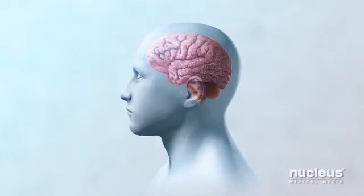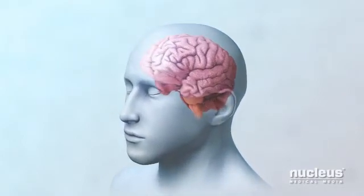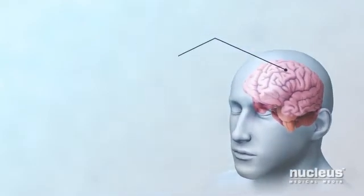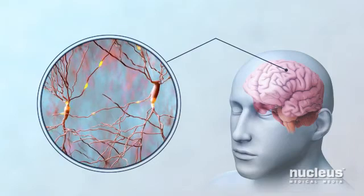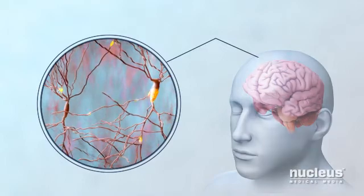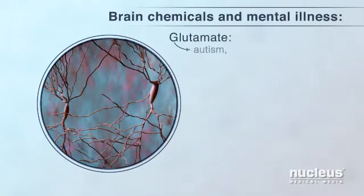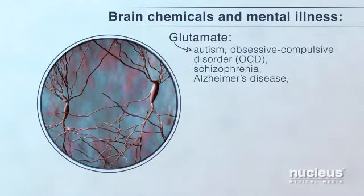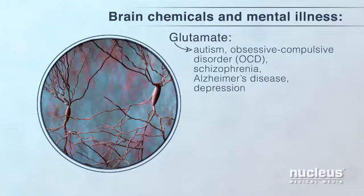When there is an imbalance of chemical messengers in the brain, neurons may have trouble passing messages between each other. The most common chemical messenger is glutamate. It increases the chance that an impulse will form in other neurons. People with mental illnesses such as autism, obsessive-compulsive disorder, schizophrenia, Alzheimer's disease, and depression may have problems making or using glutamate.